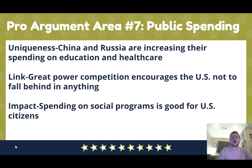The seventh argument area is public spending. Even though this is a foreign policy topic, it has domestic implications. When we try to be better than Russia and China militarily, economically, and diplomatically, that encourages improving efforts at home. When Russia and China spend more on education and healthcare, we want to do the same to show that we as a democracy are better, which forces us to try and not fall behind in anything.